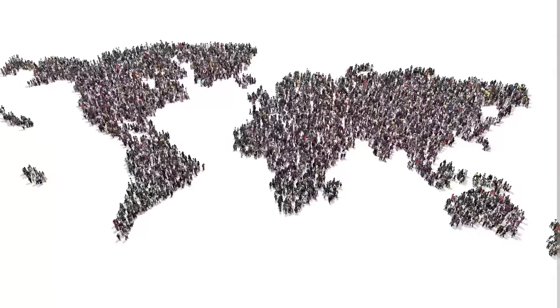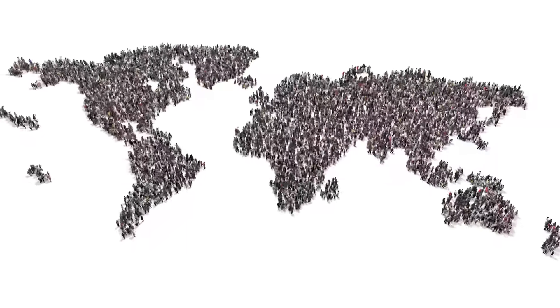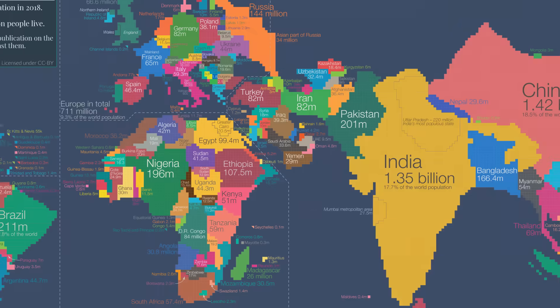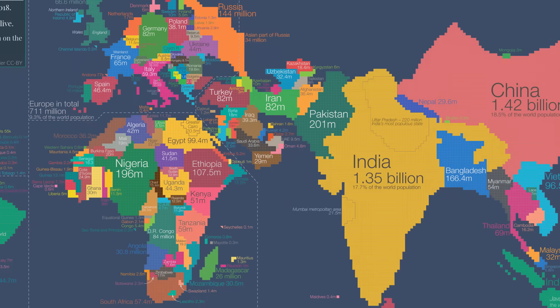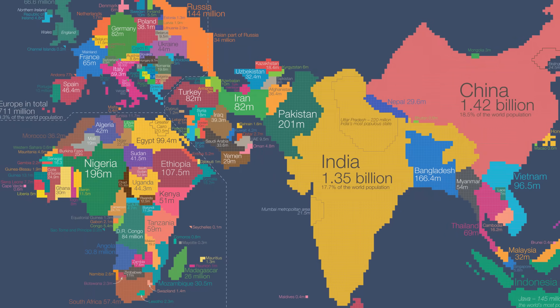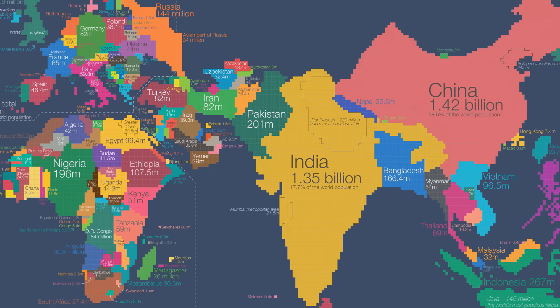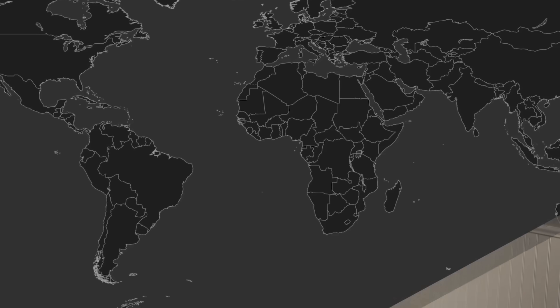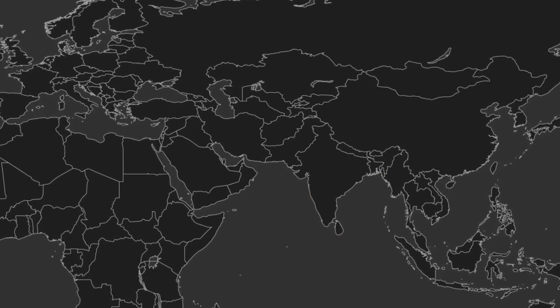One problem we have with answering this question is that people are not spread out evenly across the globe. This becomes evident when looking at this cartogram, which shows the different populations of each country in the world. Today we can see that there are four big regions that have over two-thirds of the world's population living in them.